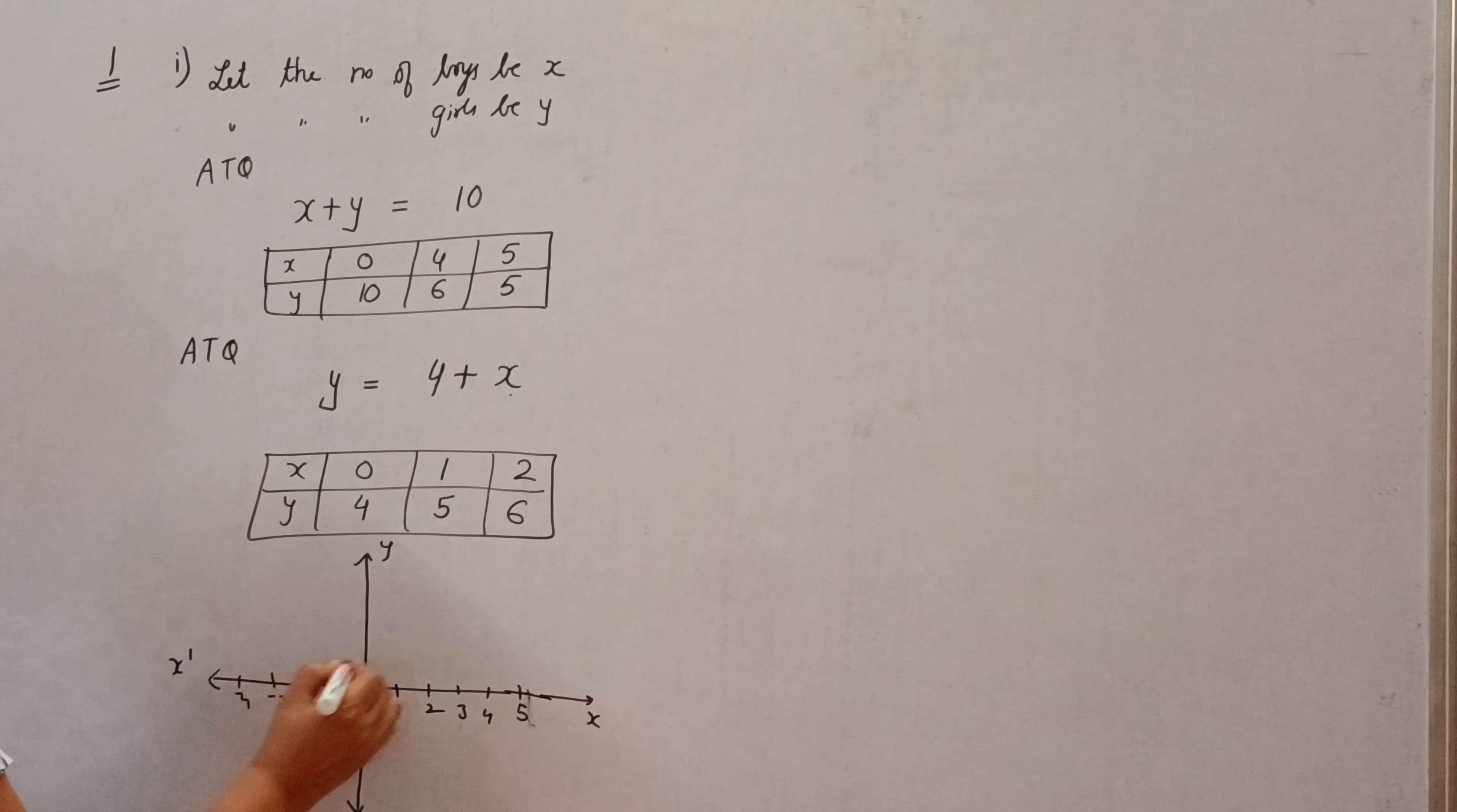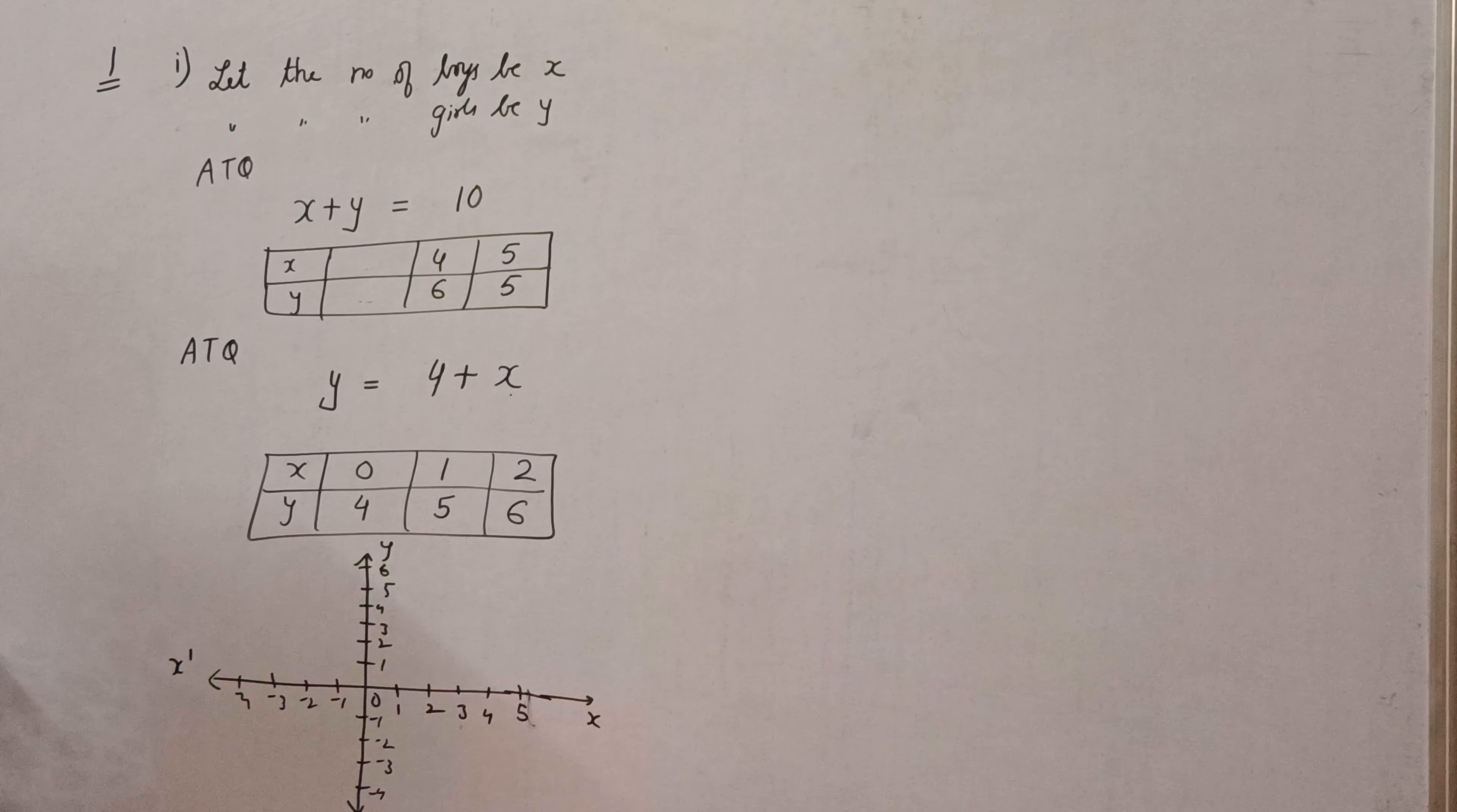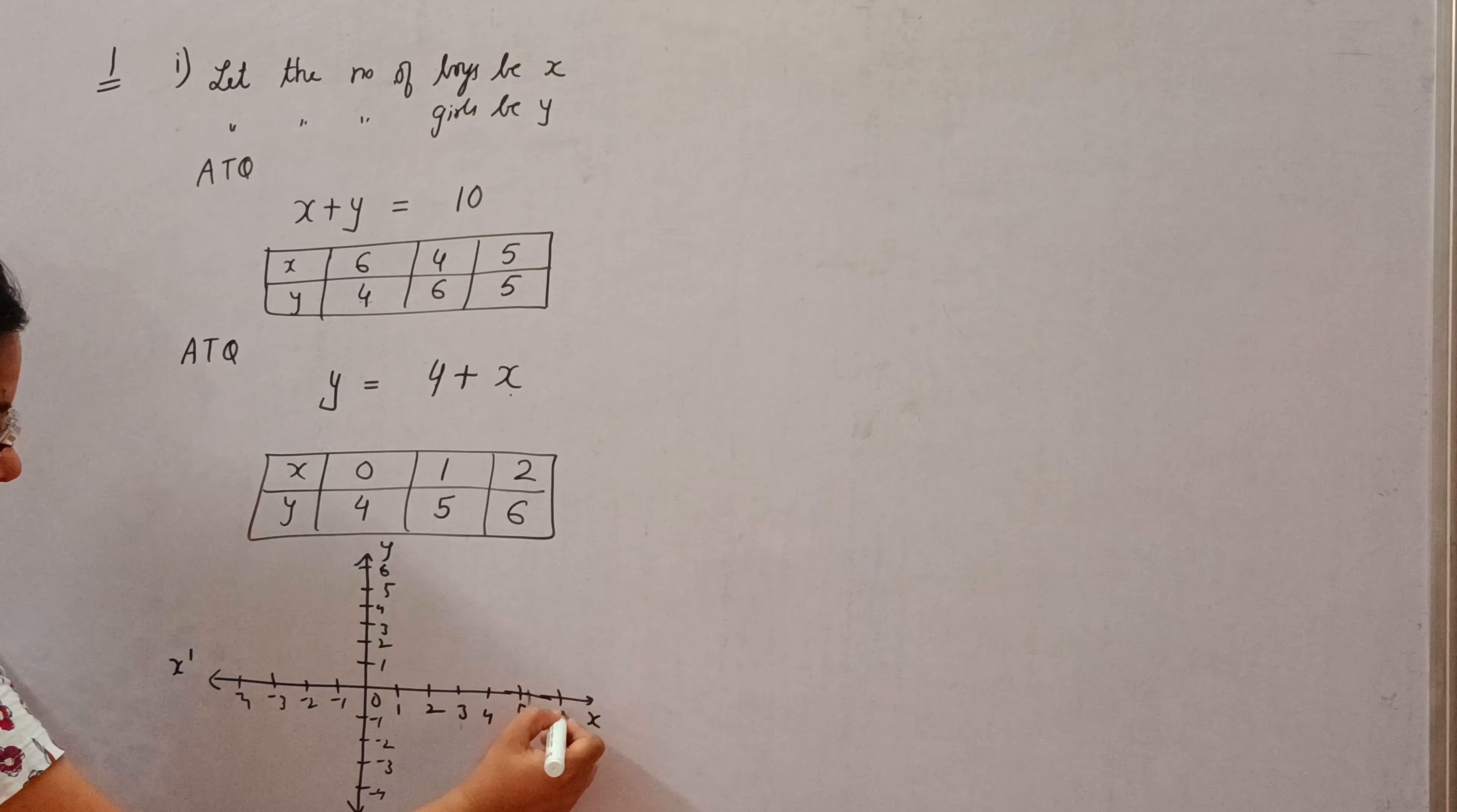Now, when x is 0, y is 10. So, let's take another value. So, suppose if x is, because we have taken this up to the value 6. So, 6 and 4 we have taken or we can take 6 plus 4, 5 plus 4. So, suppose if x is, so we can take x as 6. Take x as 6, then y will become 4. x is 6, then y will become 4. So, this is the point.